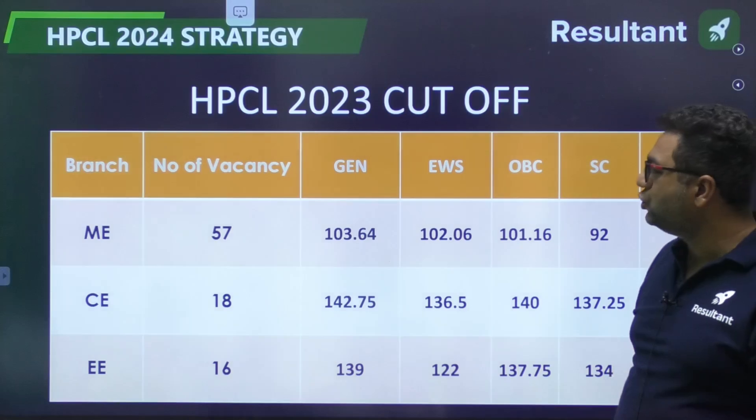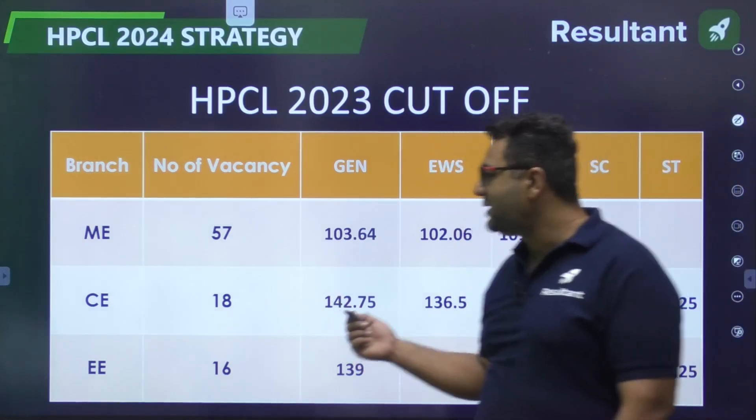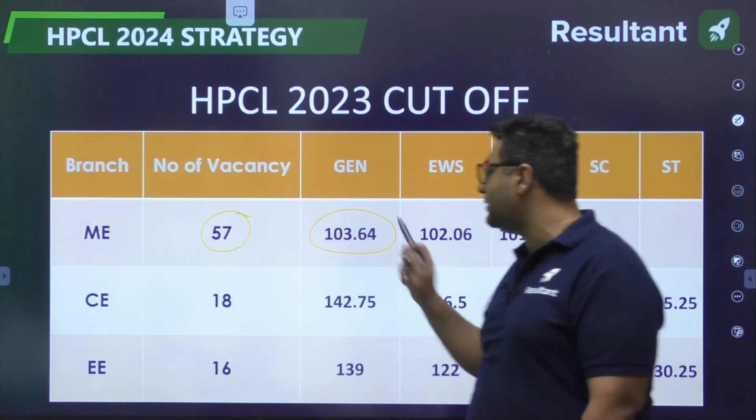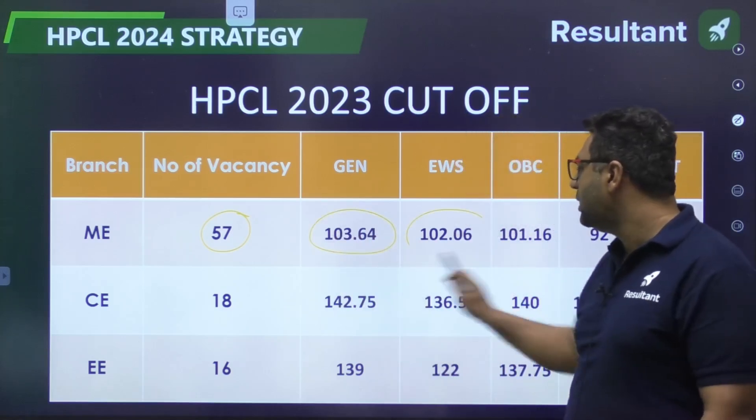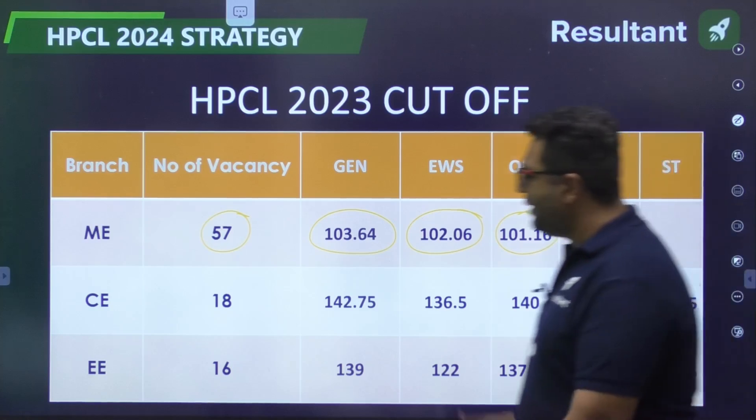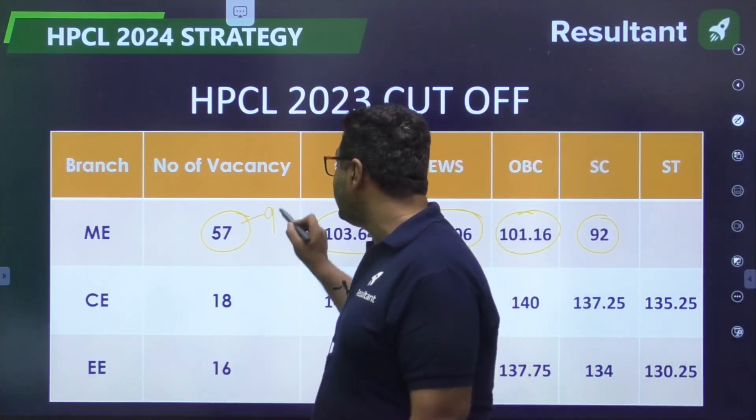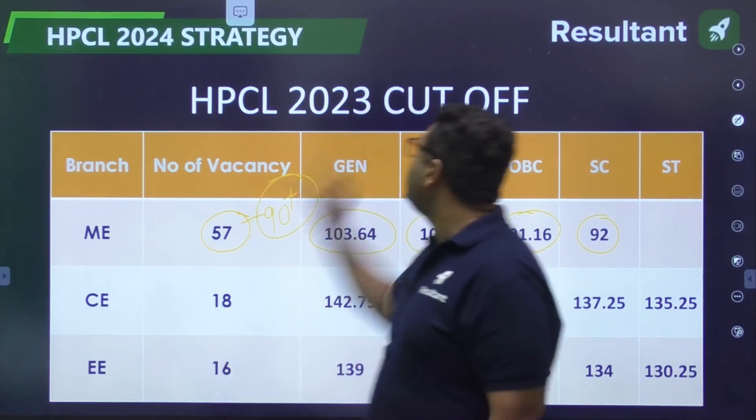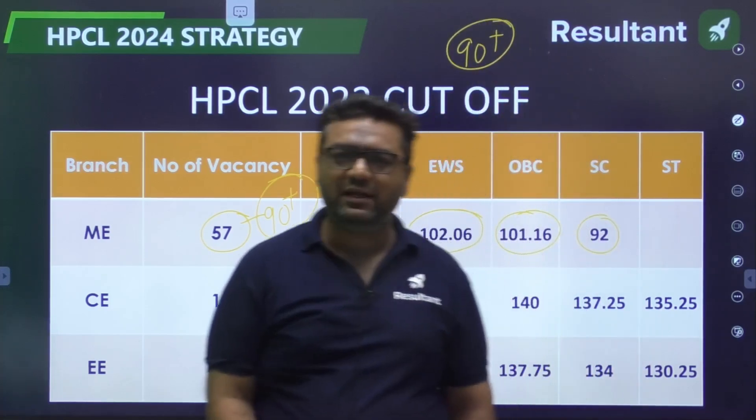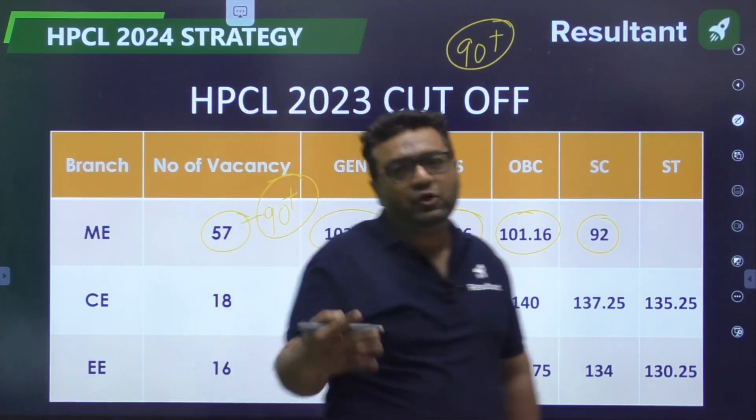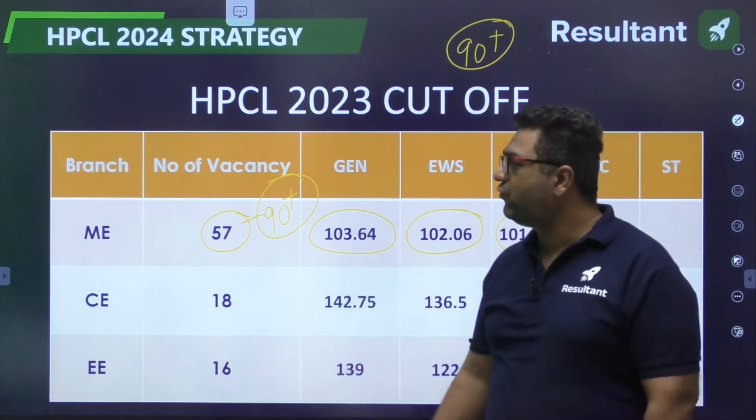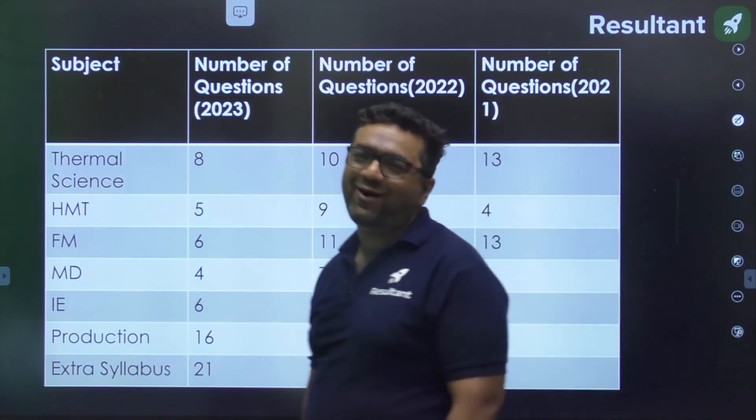For last year's mechanical, 57 seats were there and cutoff was 103.64 for general category, 102 for EWS, 101 for OBC, 92 for SC. When the seats are more than 90 plus, the cutoff should go down to around 90-95. If cutoff is coming down, it's advantageous for you.